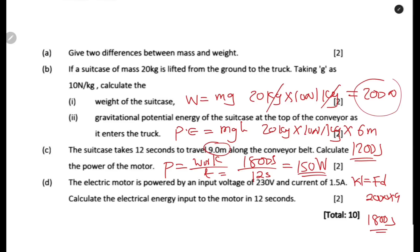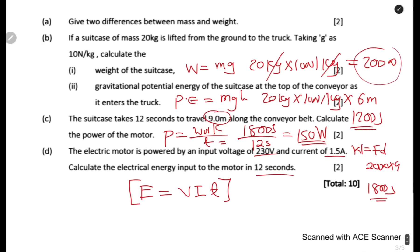The last question: an electric motor is powered by an input voltage and current. Calculate the electrical energy input to the motor in 12 seconds. Energy = V × I × T — voltage times current times time. That brings us to the end of the lesson; see you in the next one.